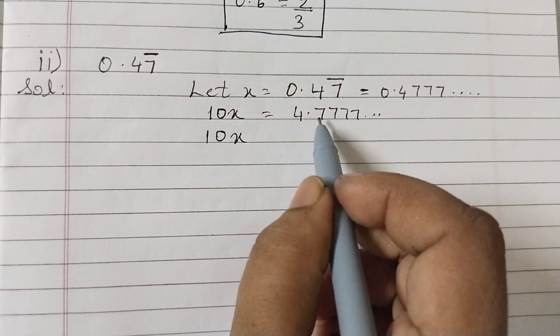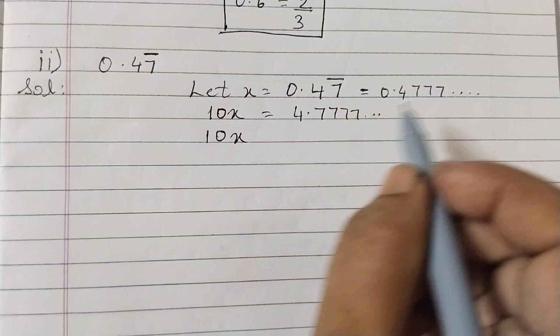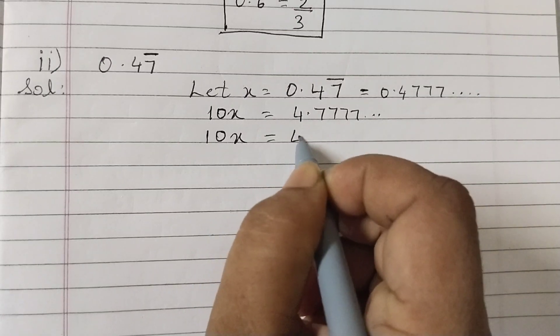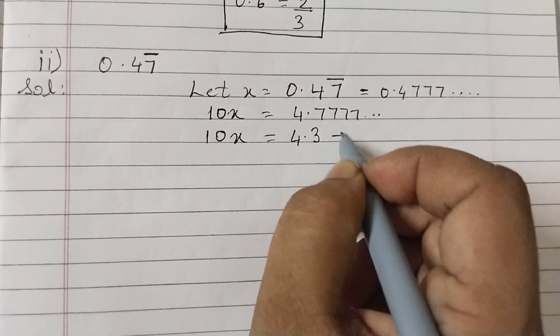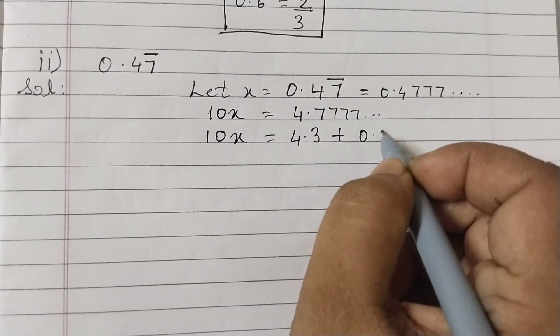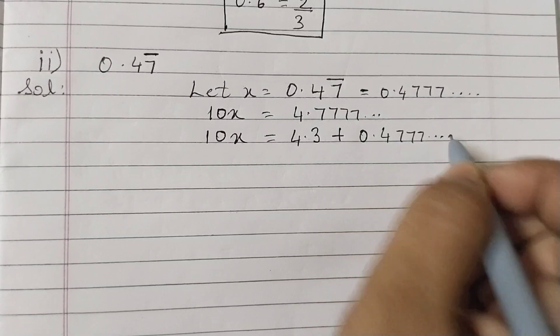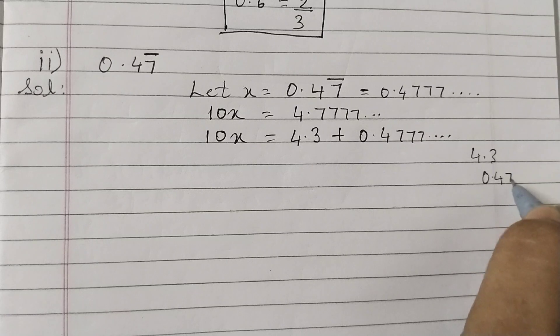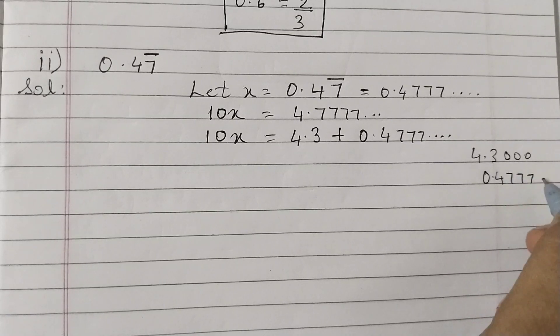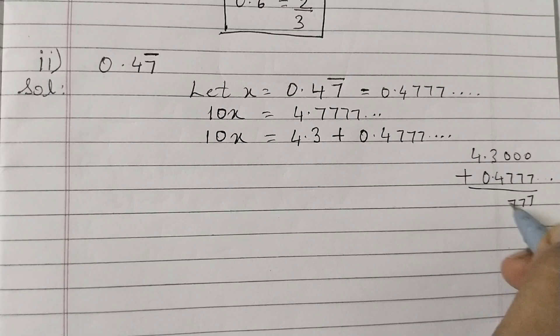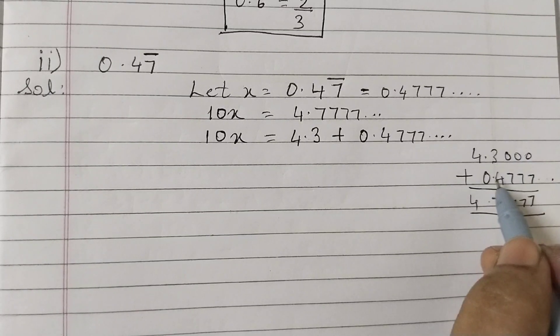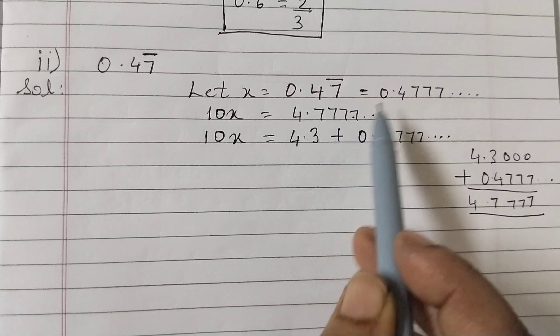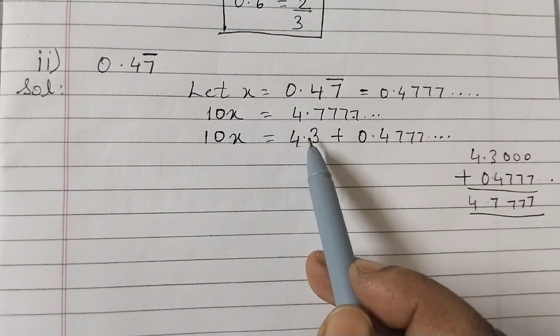Next, we need to write this number in such a way that we get this number plus something. So that would be 4.3 plus 0.4777... Now let's check: 4.3 and 0.4777, we can put zeros here, add 7777. See, we are getting this number. Some students find it difficult to get this number.